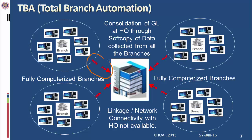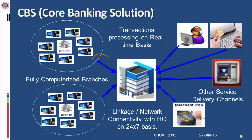In the TBA chart, dotted arrows show limited connectivity — branches were computerized but not connected to a central server directly. Data used to move via floppy disk, CD, or flash drives. In CBS, connectivity is live — not only to branches, but also to phone banking, internet banking, ATM machines, and point-of-sale machines. All kinds of interfaces are connected to the central server. The major difference is the way the system connects to and retrieves data from the central server.